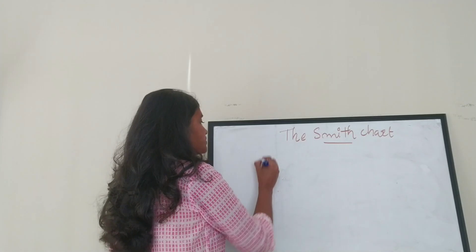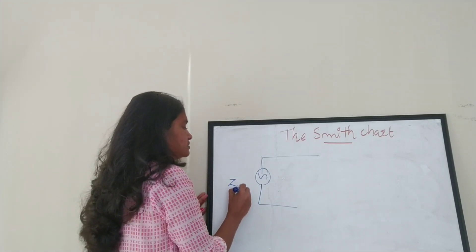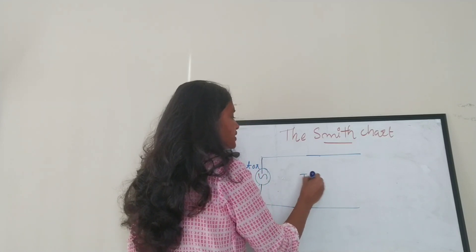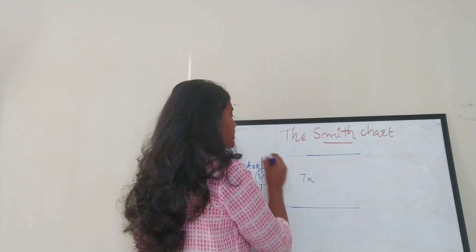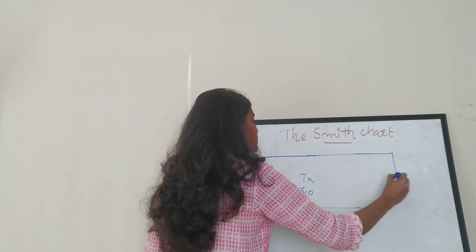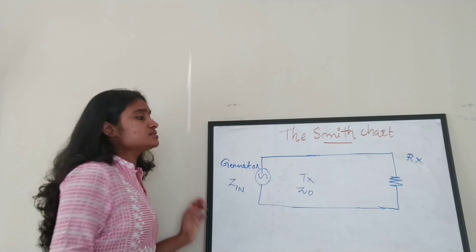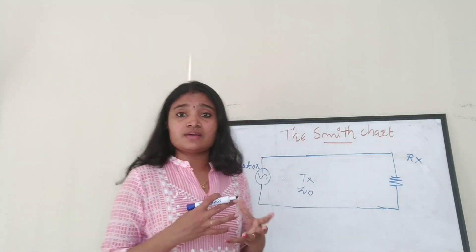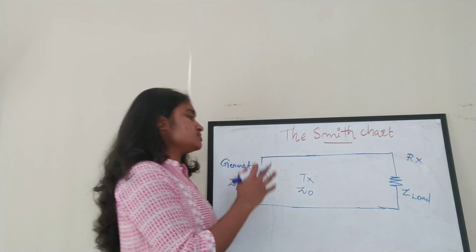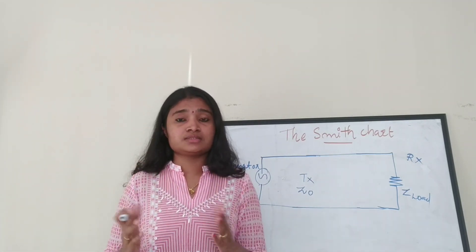The transmission line consists of a generator that generates the electromagnetic wave. This wave is sent using the transmission line, represented as TX, which has a line impedance Z₀. On the receiving side there is a receiver with a load resistor having a load impedance Z_load. So there are three things: a generator, a receiver, and a load resistor with load impedance.